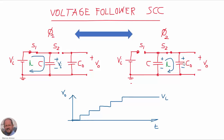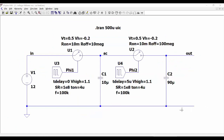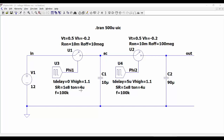In the first interval, S1 closes and charges capacitor C up to Vi, producing a current pulse. In the second interval, S2 closes, transferring charge from C to output capacitor Co — another current pulse. The output voltage increases a little each cycle, gradually rising until it equals the input voltage. An LTSpice simulation uses Vi = 12V, C1 = 10 µF, C2 = 90 µF, no load, 100 kHz, and Ton = 4 µs.